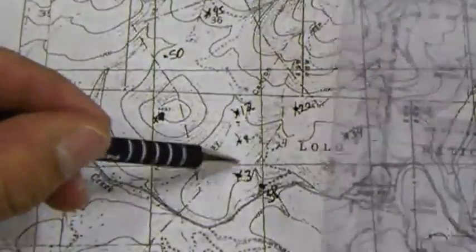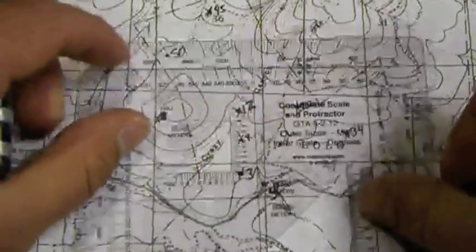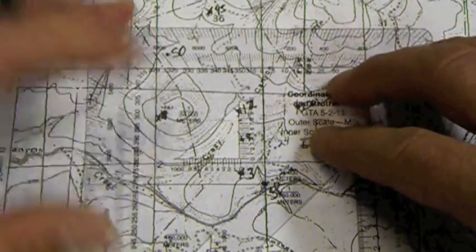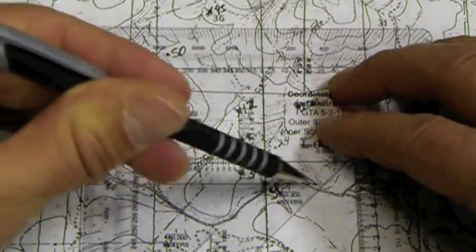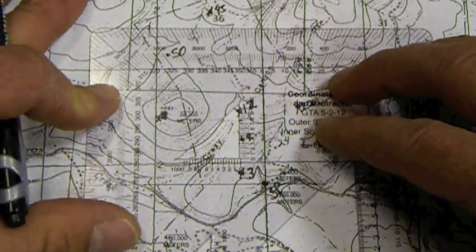Go ahead and take those crosshairs. Place them over the start point or whatever your last point was, your last known point. Place it over and line it up as best you can. Making sure that those crosshairs are parallel to the lines on the map as best you can.